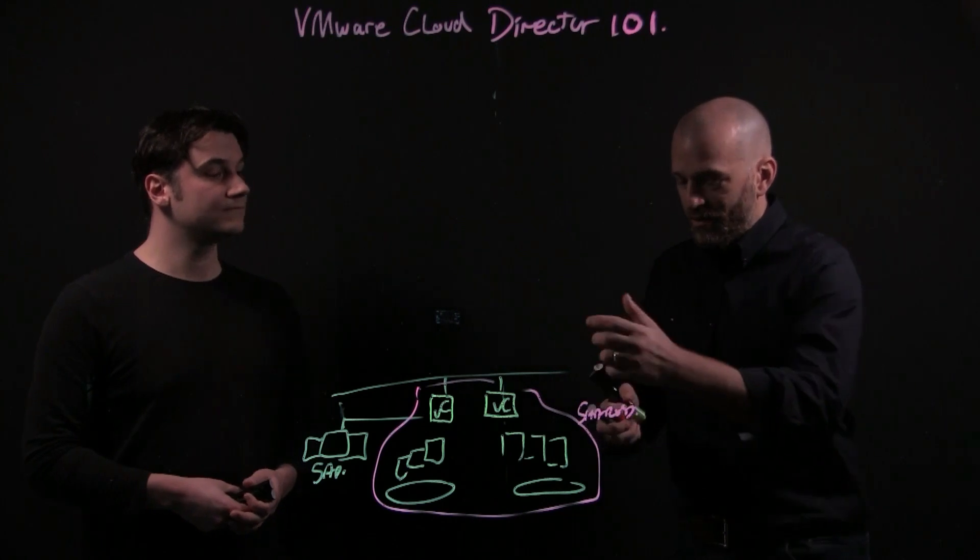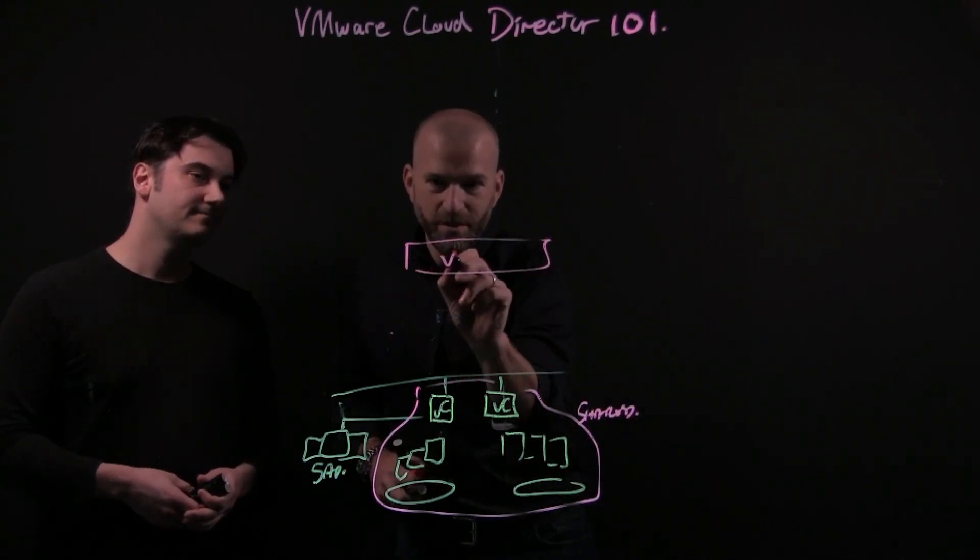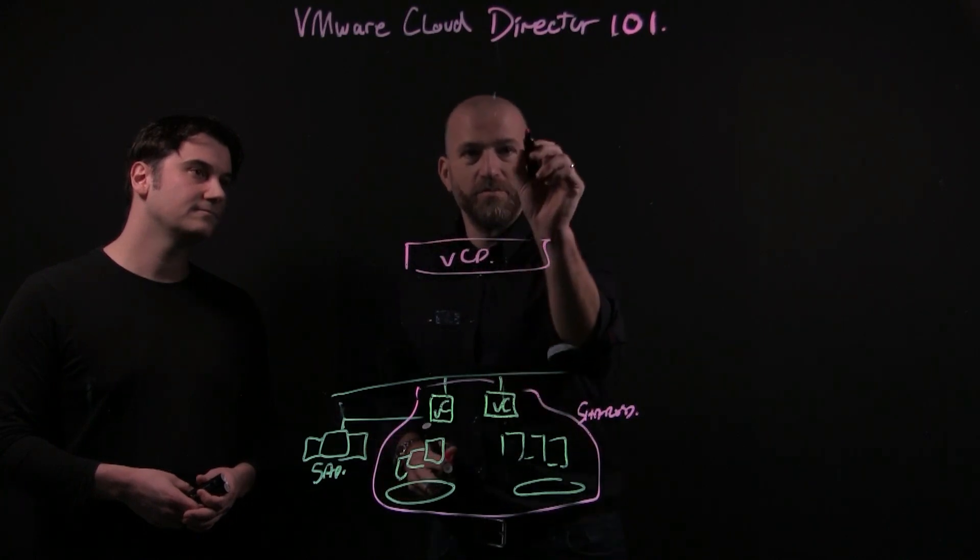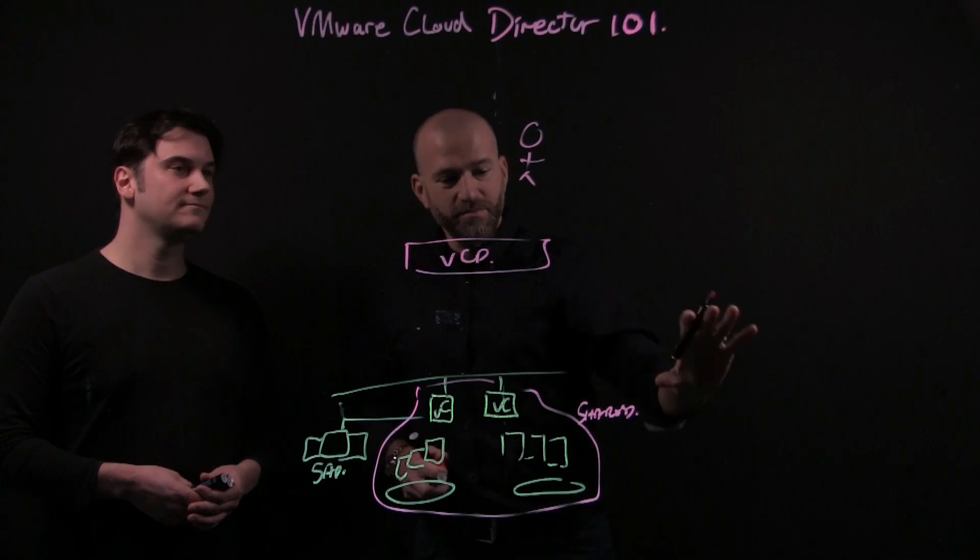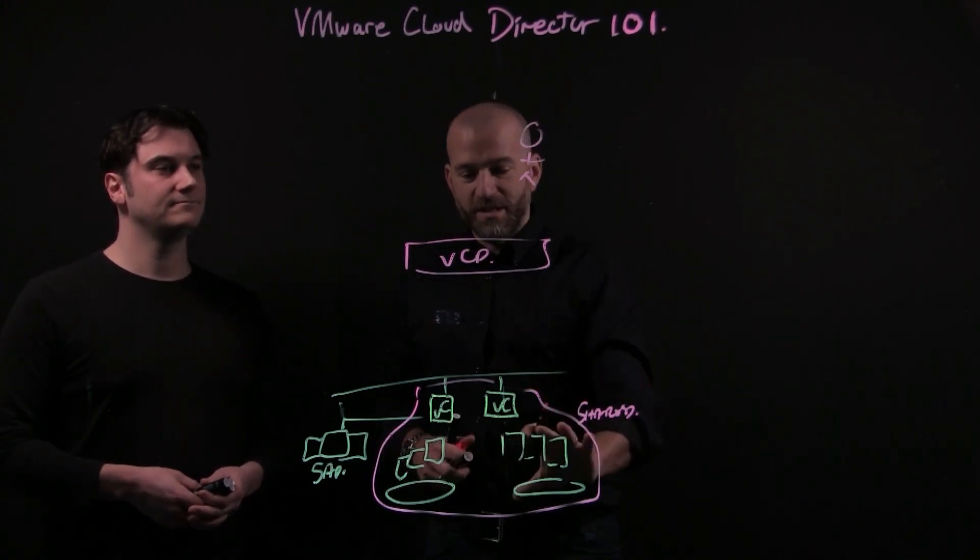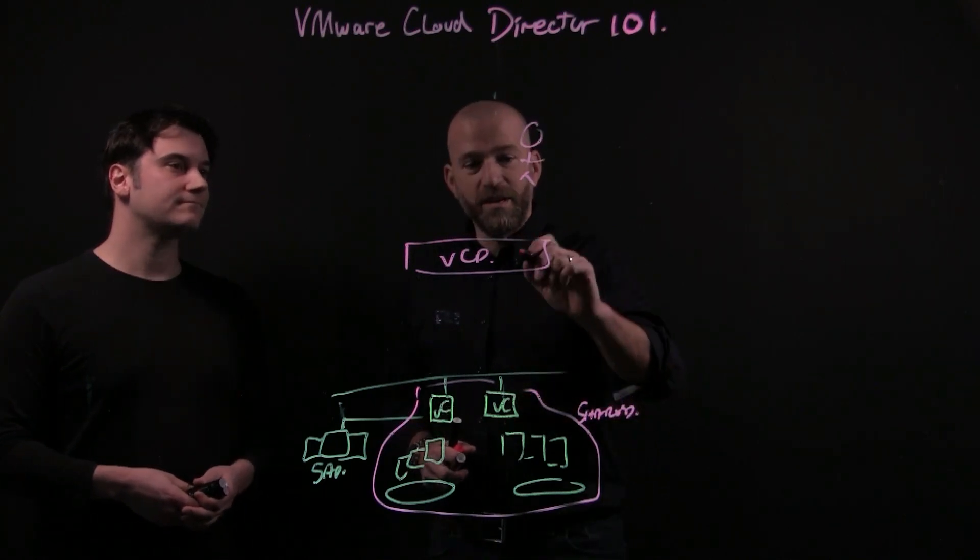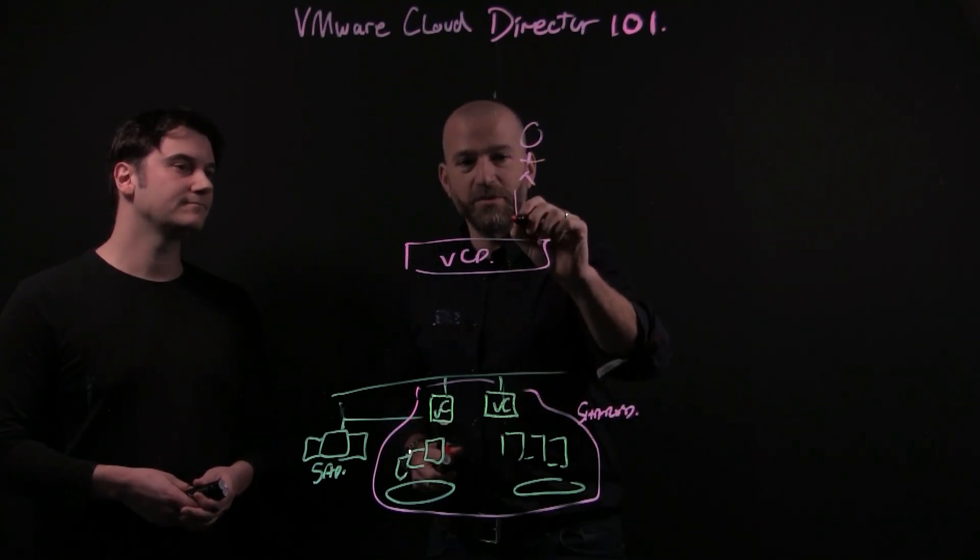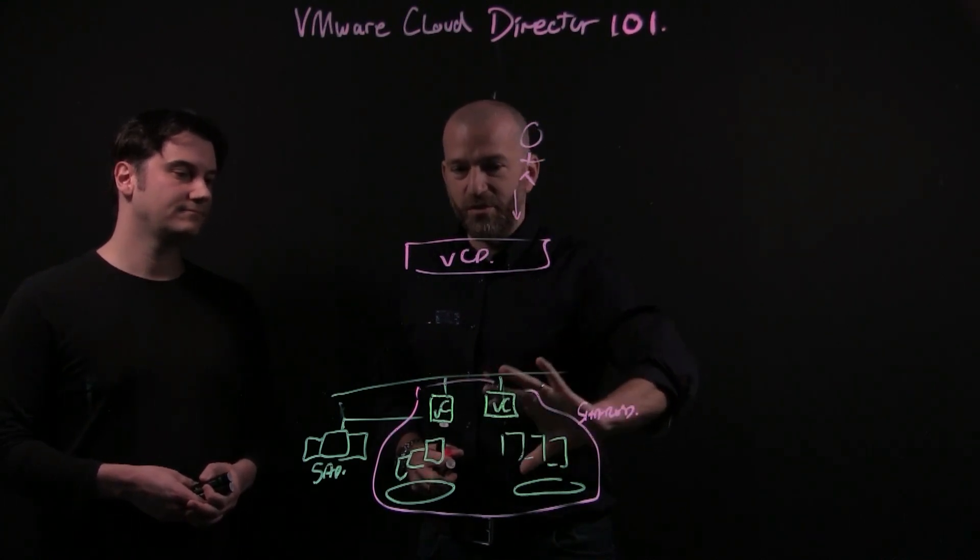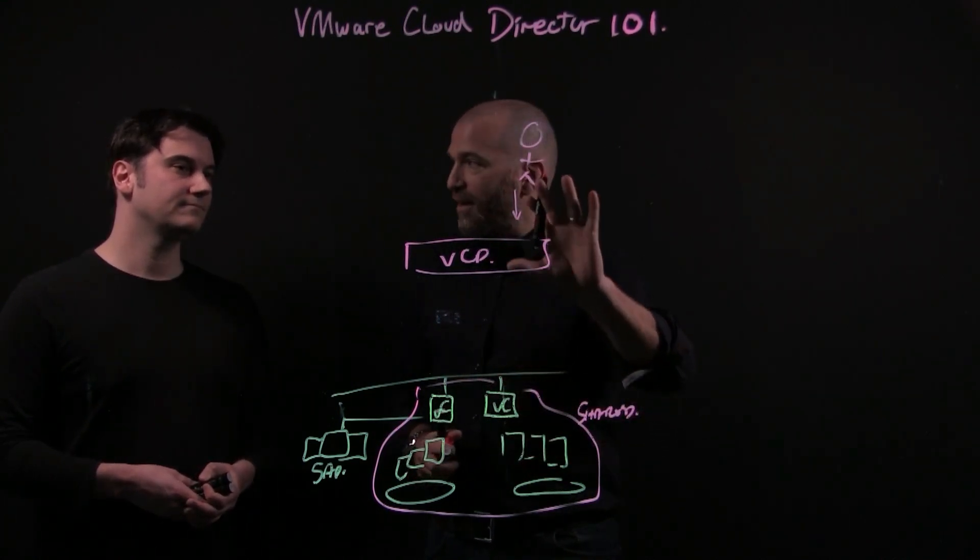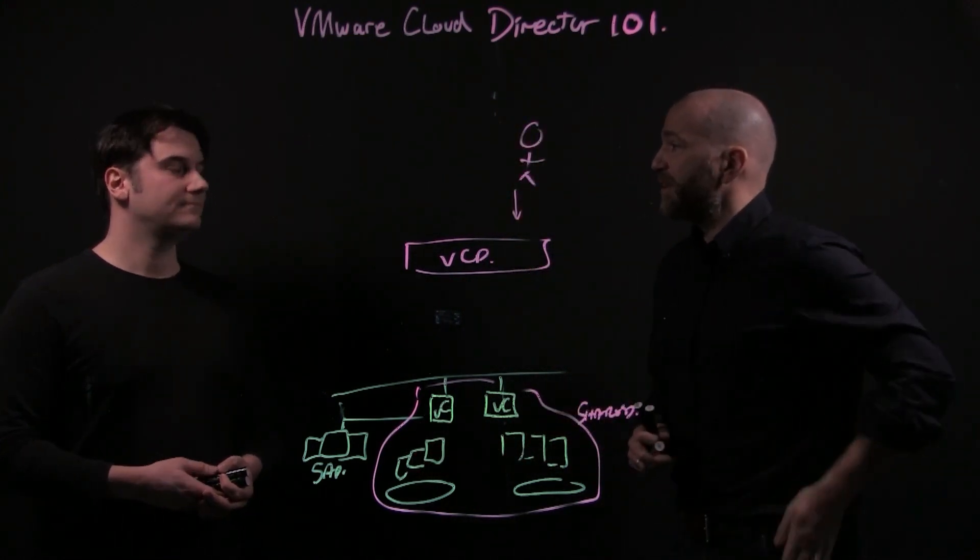So I can then offer my consumer, my customer who today comes and accesses his infrastructure via some sort of VPN. Now with vCloud Director, he will be able to access a self-service UI and all of this is abstracted from him, but he'll still be able to play with his VMs and whatever else I built for him in there.